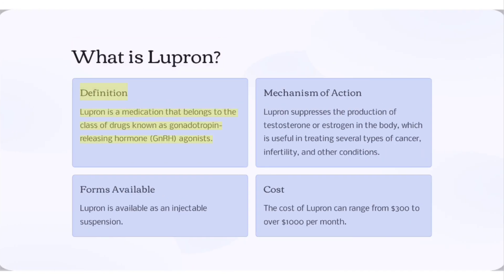Lupron is a medication that belongs to the class of drugs known as gonadotropin-releasing hormone (GnRH) agonists. Lupron suppresses the production of testosterone or estrogen in the body, which is useful in treating several types of cancer, infertility, and other conditions.